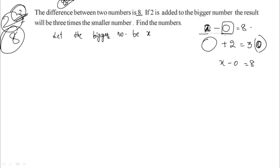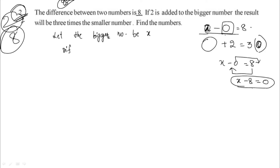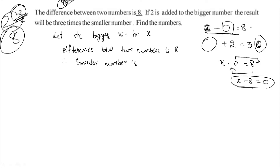The difference between the 2 numbers is 8, so the smaller number is equal to x minus 8.